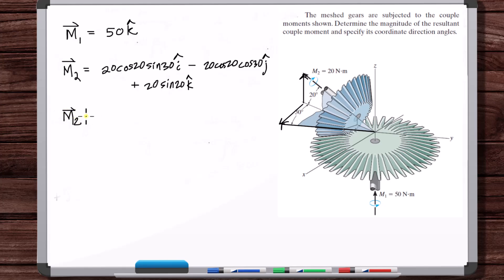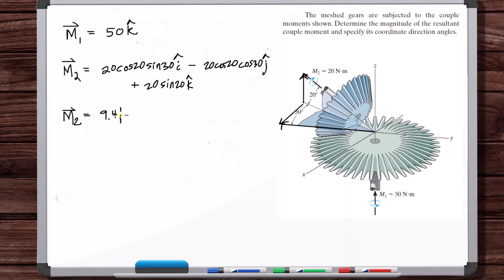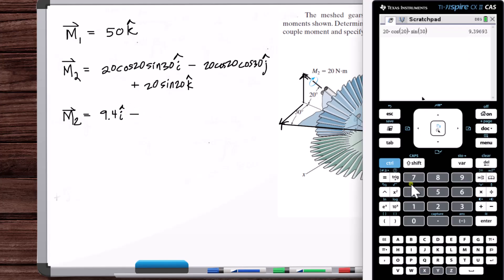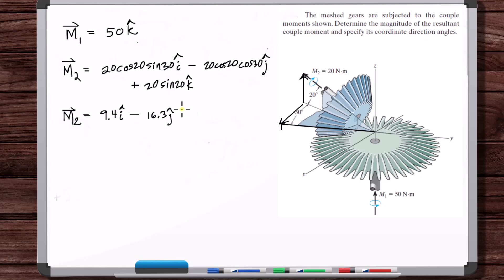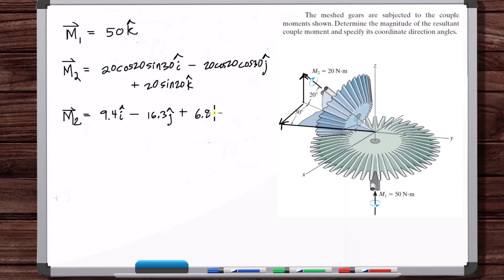So M2 is 20 cosine 20 times sine 30, 9.4 I-hat, minus 16.3 J-hat, plus 6.8 K-hat. And these vectors are in Newton meters. So there we go.